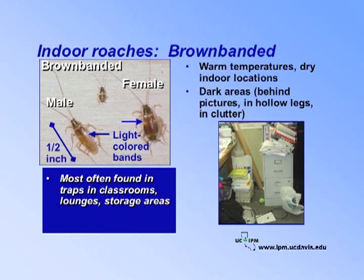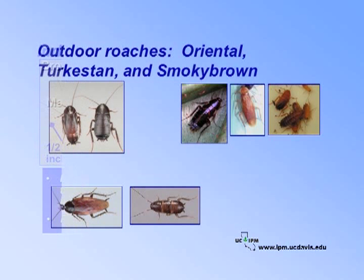Management practices for brown-banded roaches are similar to those of the German cockroach. As much as possible, prevent serious problems by removing clutter, which provides hiding places. Oriental, Turkestan, and smoky brown cockroaches are all outdoor species, but occasionally come indoors at night looking for food. All of these roaches are much larger than the indoor species.